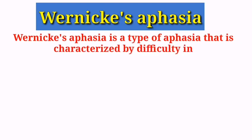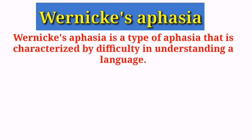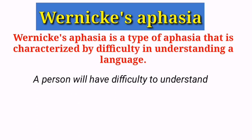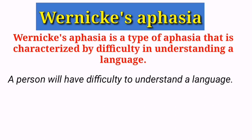Wernicke's aphasia is a type of aphasia characterized by difficulty in understanding language. It is another language disorder, but in this disorder a person will not be able to understand spoken or written language. If you say something to a person who has this aphasia, he or she will not be able to get meaning from your sentence. It is caused by damage to Wernicke's area, which is the part of the brain responsible for language processing. It is different from Broca's aphasia because Broca's area is responsible for speaking, while Wernicke's area is responsible for comprehension.